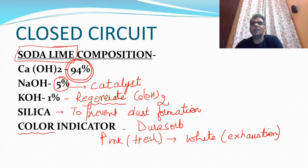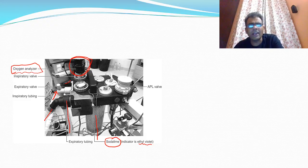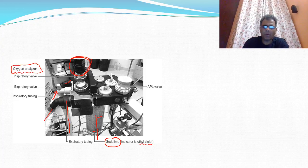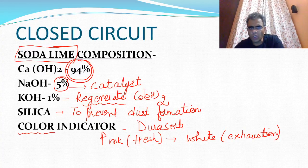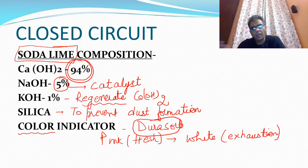There are other color indicators as well, like ethyl violet, which is now starting to be used in India. Ethyl violet is white in color when fresh and becomes violet when exhausted. But for exam purposes, remember Durasorp which is most commonly used in India. If they simply ask the color of soda lime when fresh, mark pink; when exhausted, it is white.